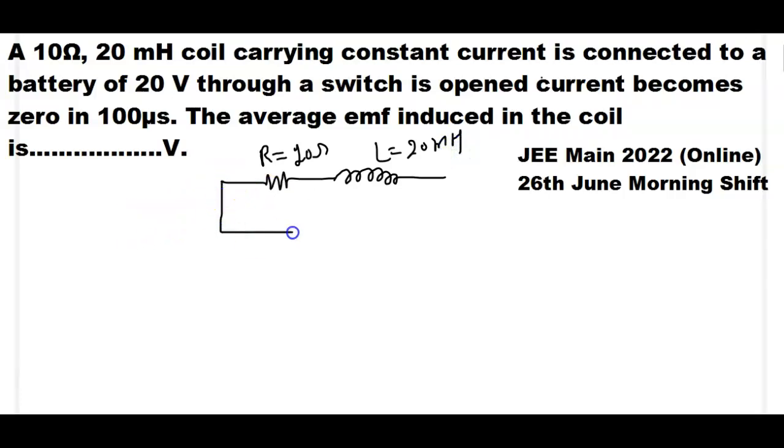The battery is connected to the battery of 20 volt through a switch. And when switch is closed then current drawn from the battery is I.